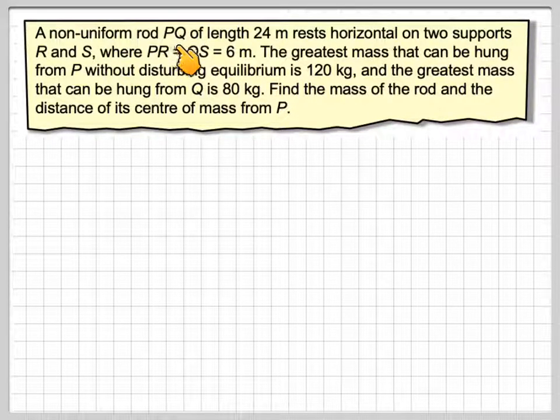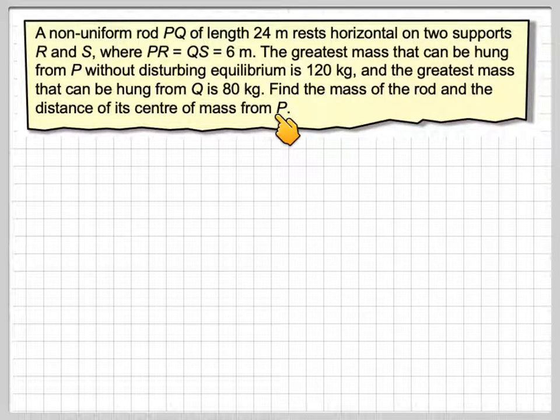A non-uniform rod PQ of length 24 meters rests horizontal on two supports R and S where PR is equal to QS is equal to 6 meters. The greatest mass that can be hung from P without disturbing the equilibrium is 120 kilograms and the greatest mass that can be hung from Q is 80 kilograms. Find the mass of the rod and the distance of the center of mass from P.